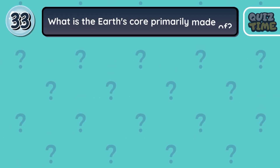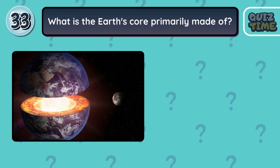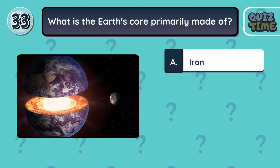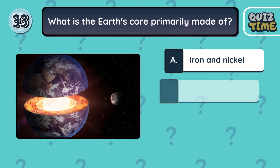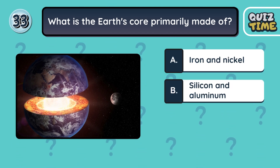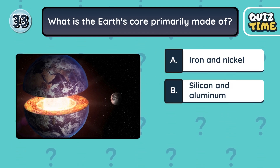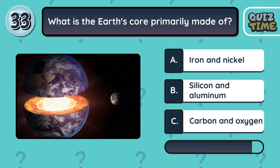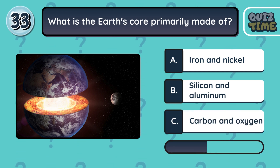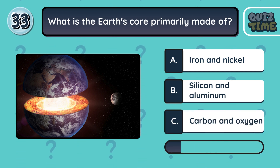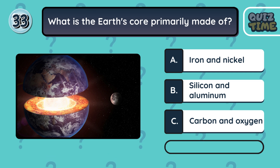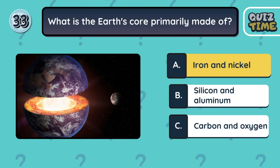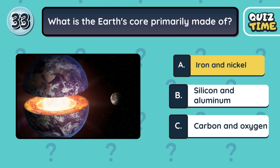Number 33. What is the Earth's core primarily made of? A. Iron and nickel. B. Silicon and aluminum. C. Carbon and oxygen. The correct answer is A. Iron and nickel.